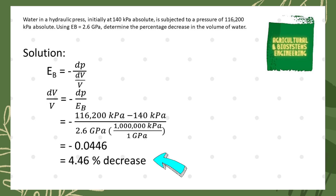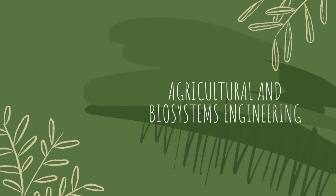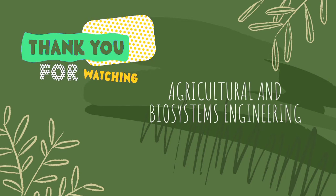The negative sign indicates the decrease in the volume. Now, our final answer must be in percentage, so we simply multiply it by 100. Finally, we have a percentage decrease in the volume of water of 4.46 percent. Thank you for watching.